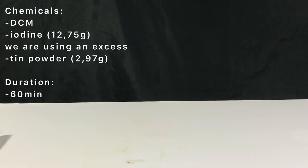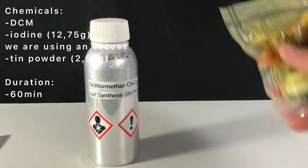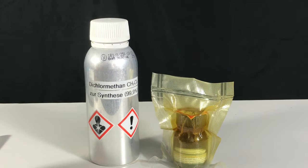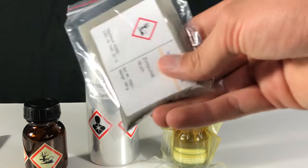Today we are going to make tin(IV) iodide. For this preparation you are going to need dichloromethane, iodine, and also tin metal.